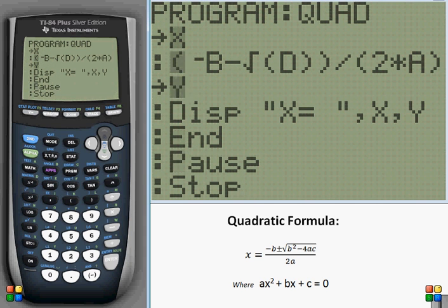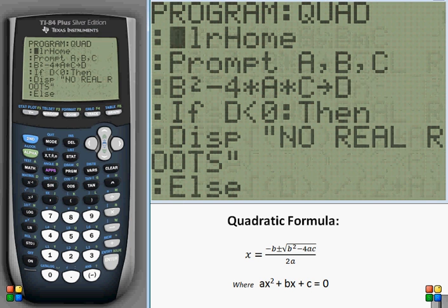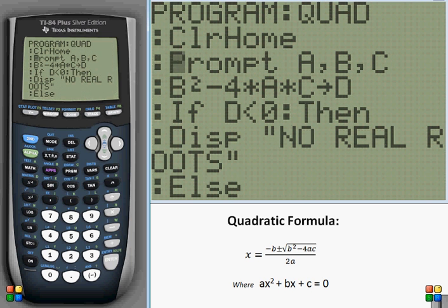And that's all the program. So just to review, we prompted for the three variables A, B, and C. We stored the determinant as D, tested to see if the determinant was less than zero, if it was negative. Then we displayed no real roots because the roots are imaginary.